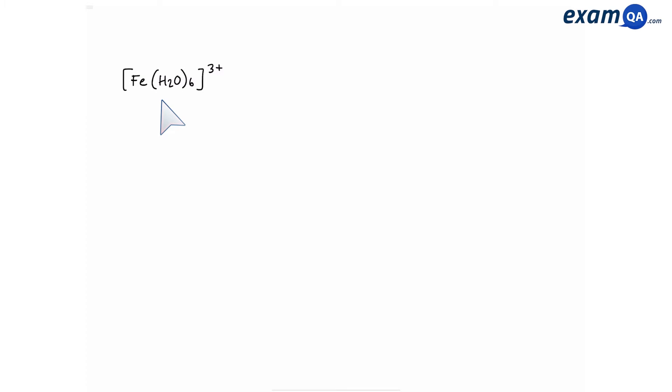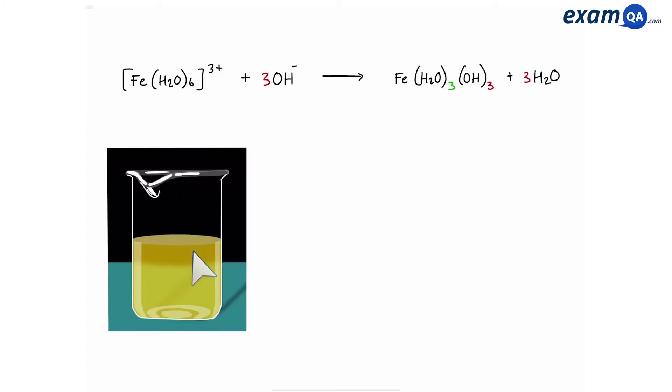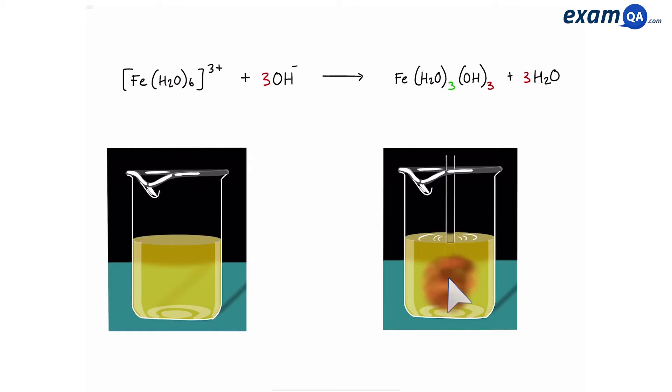Here we have iron 3+. This commonly appears as a yellow solution. Reacting with ammonia, it reacts with three hydroxides because it's a 3+, and the product formed is a brown precipitate. It will also react with ammonia in the same way.